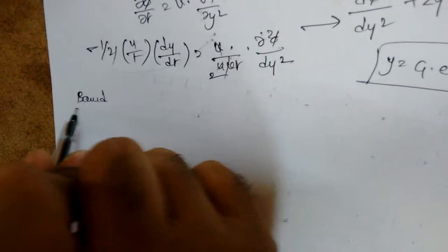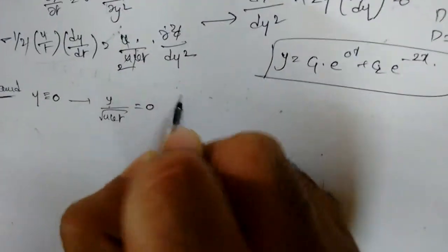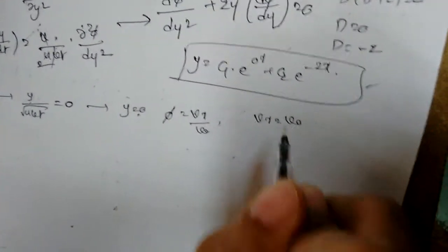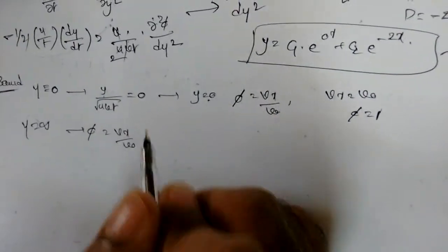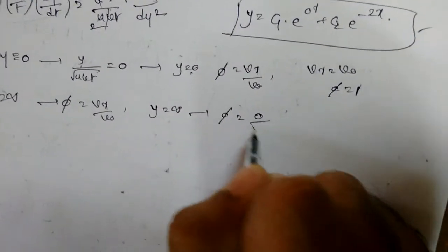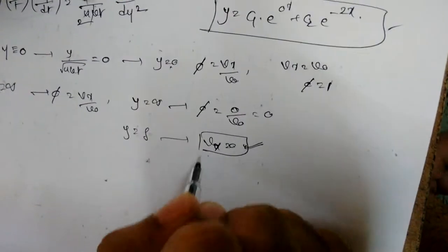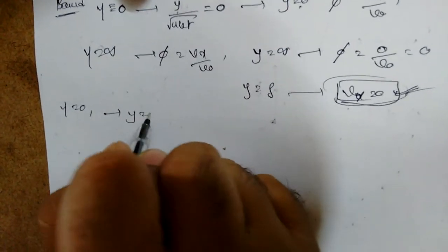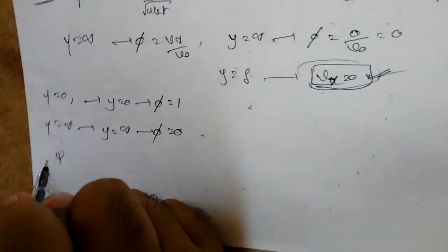Applying boundary conditions: when η = 0, y = 0, and φ = vx/v₀ = 1 (since vx = v₀). When η → ∞, y → ∞, and φ = vx/v₀ = 0 (since vx = 0). These two boundary conditions determine the constants C₁ and C₂.